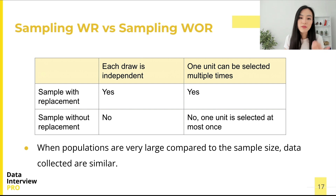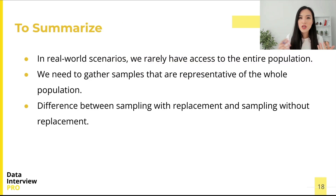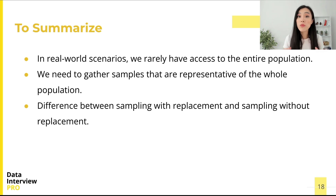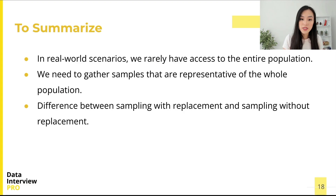Let's summarize what we have learned. In real-world scenarios, we rarely have access to the entire population we are interested in. Therefore, if we want to learn the properties of this population using statistical inference, we need to gather samples that are representative of the whole population — this is sampling. We also mentioned two ways of replacement of selected units: sampling with and without replacement.